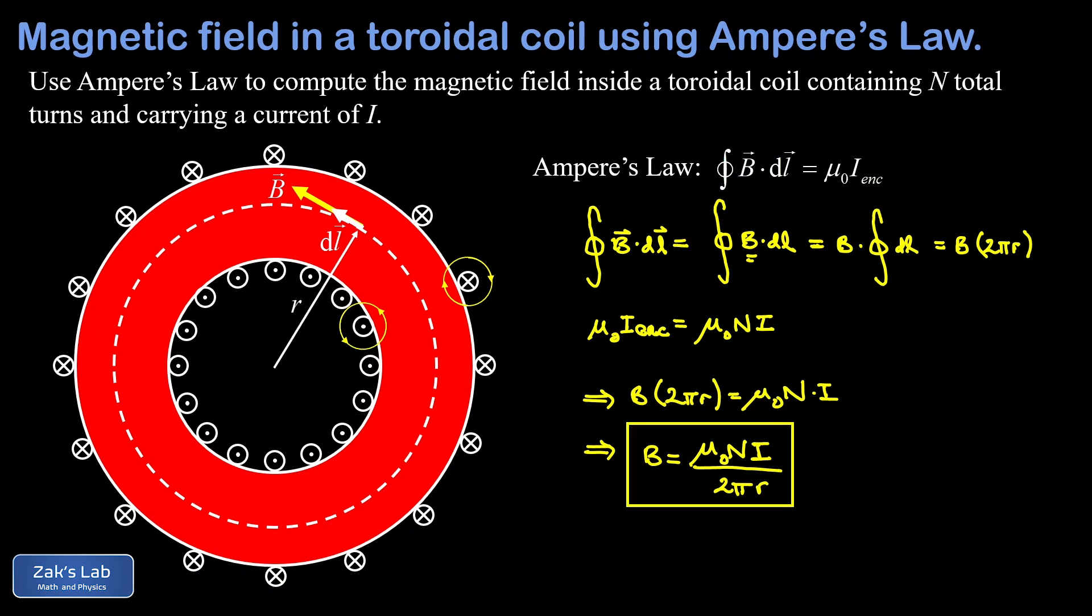This gives us an interesting contrast with the solenoid. Remember the long straight solenoid had a uniform magnetic field inside - no matter where we were inside that thing it had the same magnitude of magnetic field. Not so with the torus, which actually drops off with distance to the center of the torus as one over r.